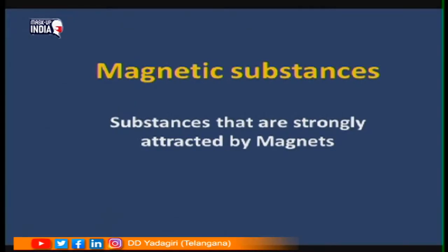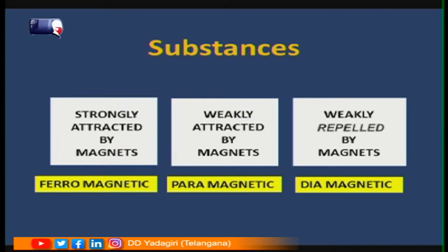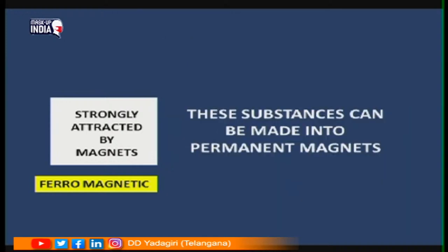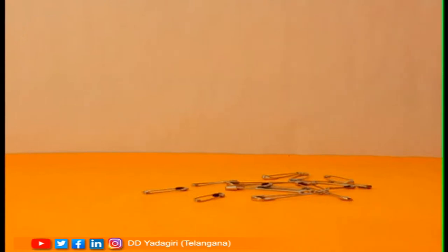Let us see various magnetic substances. Magnetic substances are those that are strongly attracted by magnets. We can classify substances into three categories: those which are strongly attracted by magnets — ferromagnetic materials; those which are weakly attracted by magnets — paramagnetic materials; and those which are weakly repelled by magnets — diamagnetic materials. We will discuss ferromagnetic materials, which can be made into magnets.